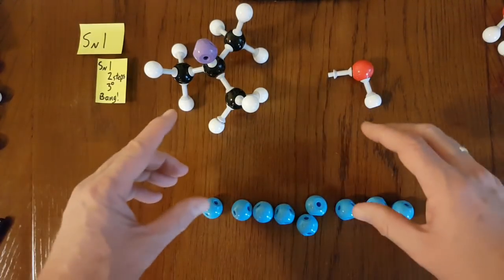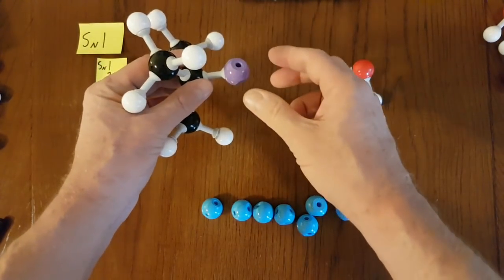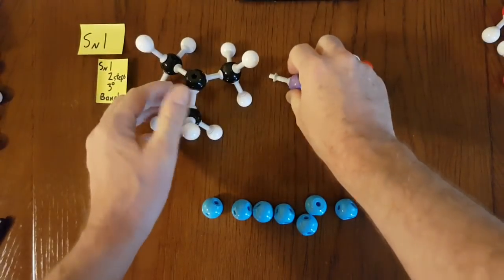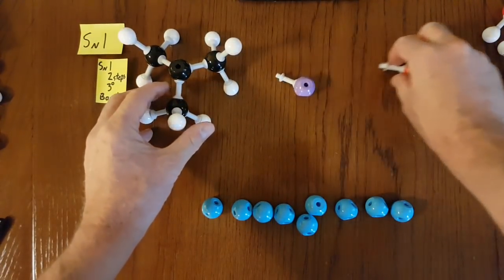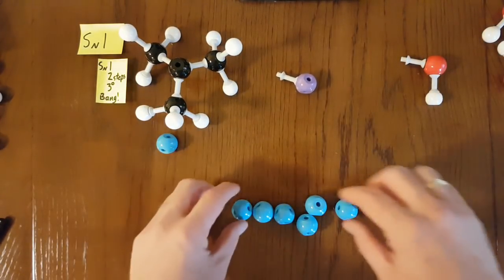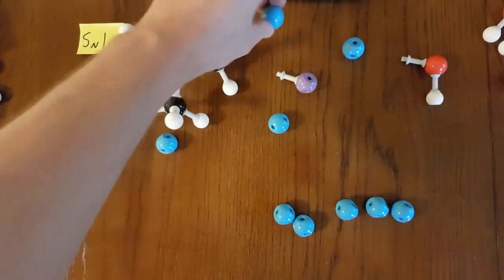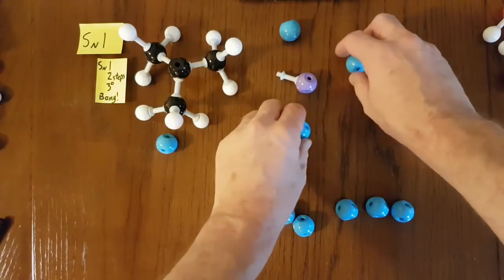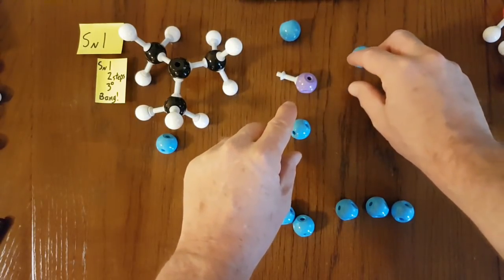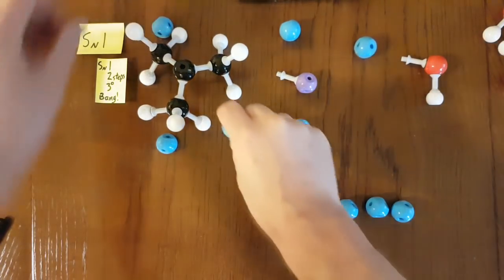So let's reset. The first part of SN1 is the halide ion comes off. Now remember, last time the water came in and stabilized these. But these molecules, for example, methoxymethane, these aren't very polar. And they're not going to make very strong bonds between the solvent and the halide ion. So they're not going to stabilize them much at all.